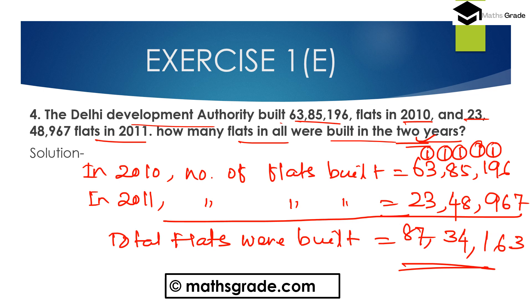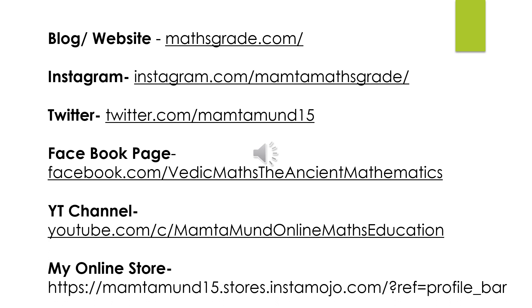So the number of flats built in these 2 years — 2010 and 2011 — is 87,34,163.